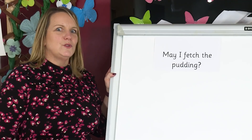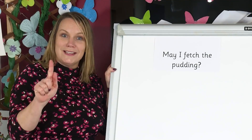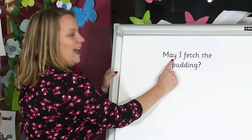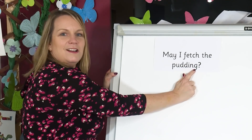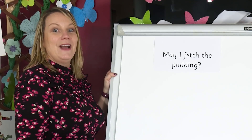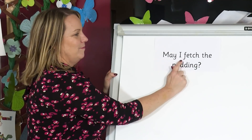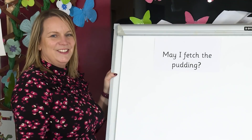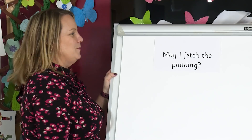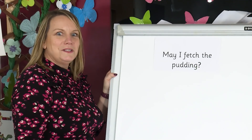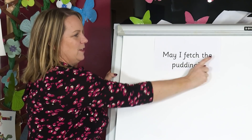Now let's read a sentence with graphemes we already know. Can you see any words with digraphs or trigraphs? Remember, digraphs are two letters one sound and trigraphs are three letters but one sound. Yes, these words have digraphs — a, d and ng. And then this word has a trigraph. Now I want you to read aloud as I point to the words. Remember to sound out any words you're not sure of. Excellent reading. Now let's read the sentence together. Read with me as I point to the words: May I fetch the pudding.